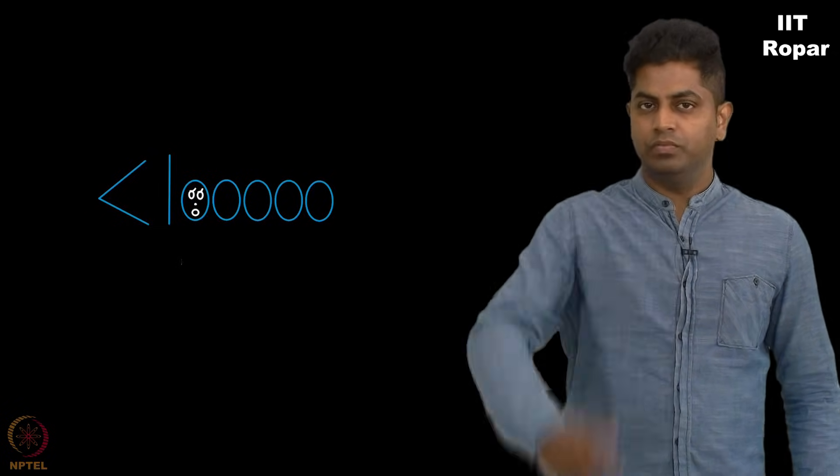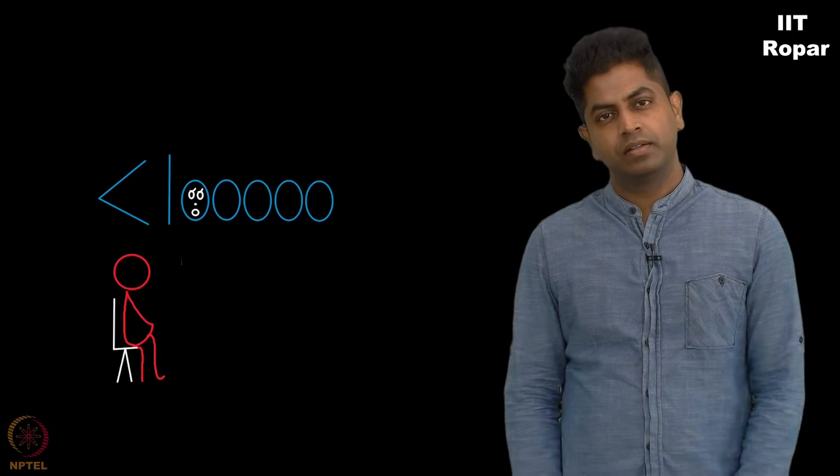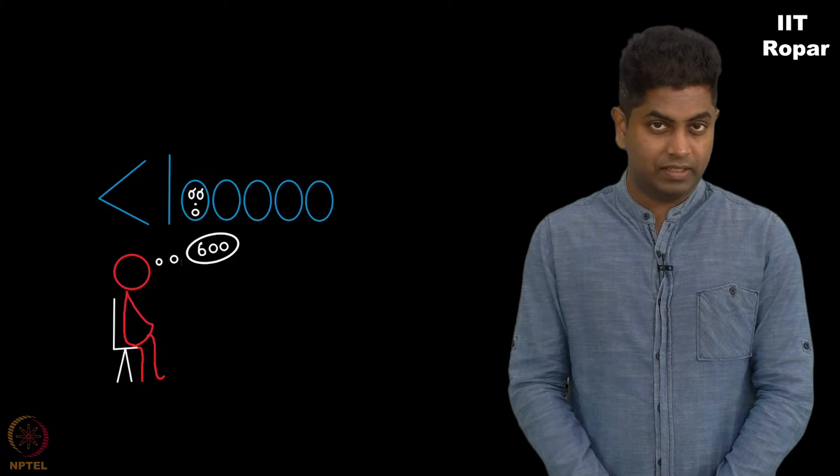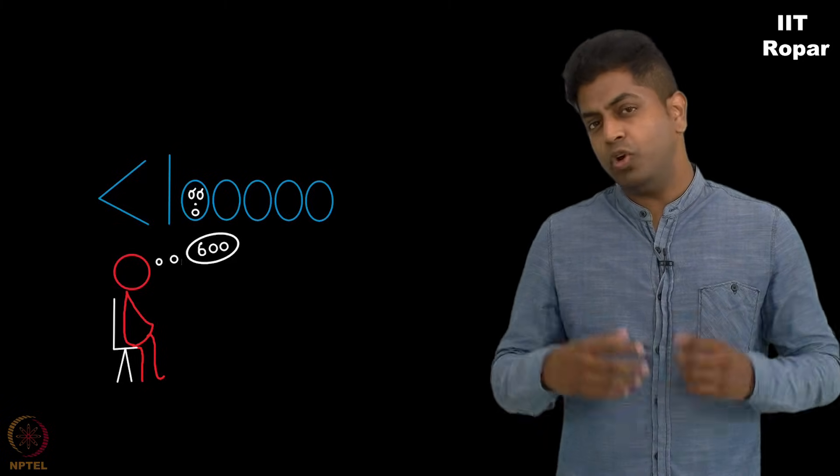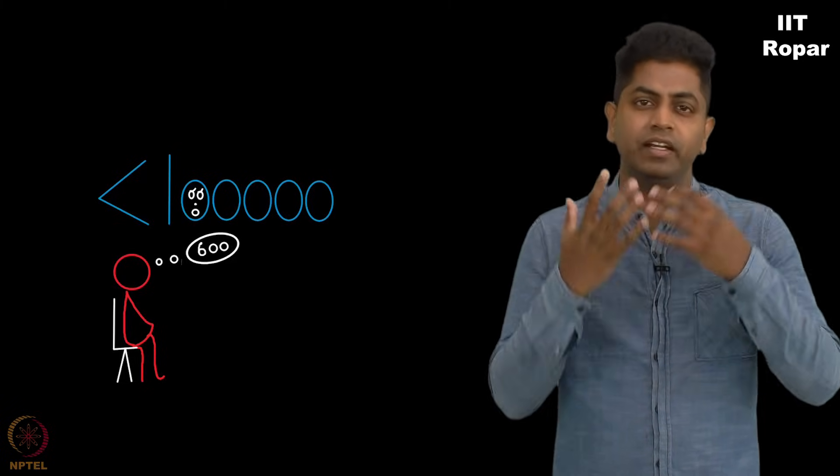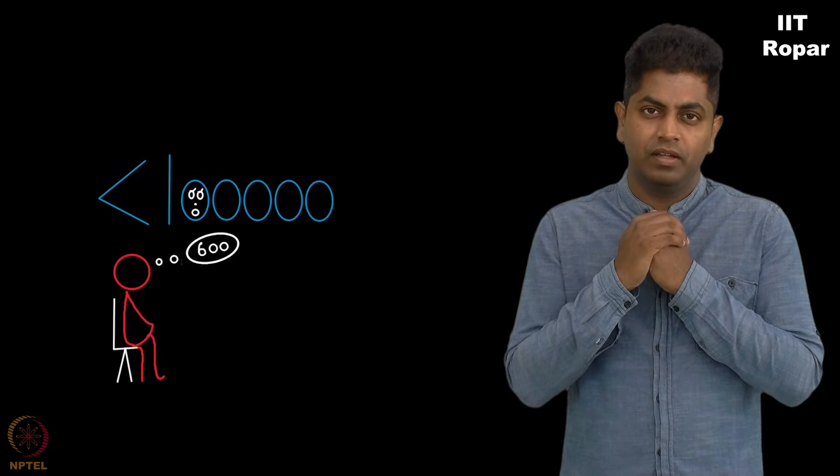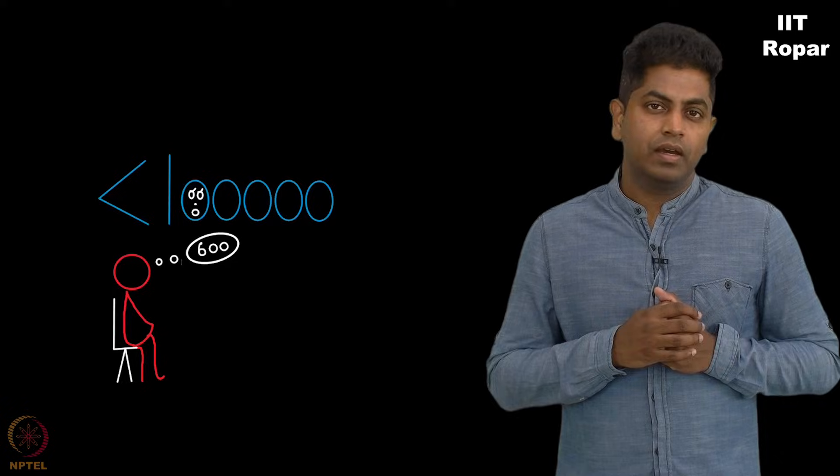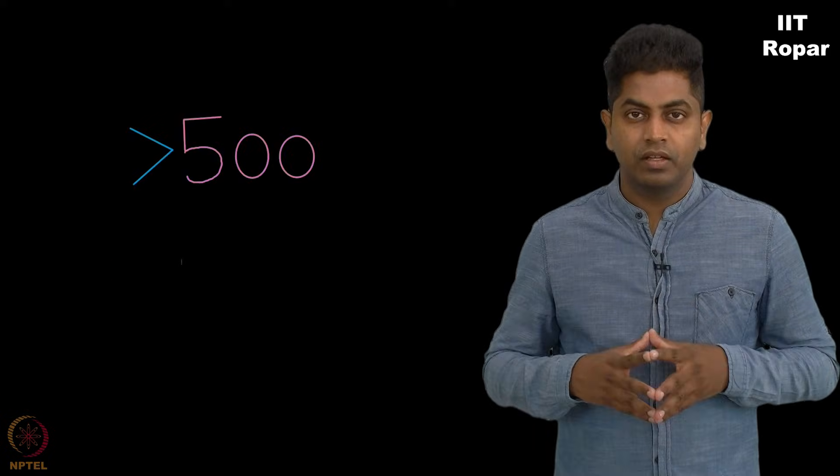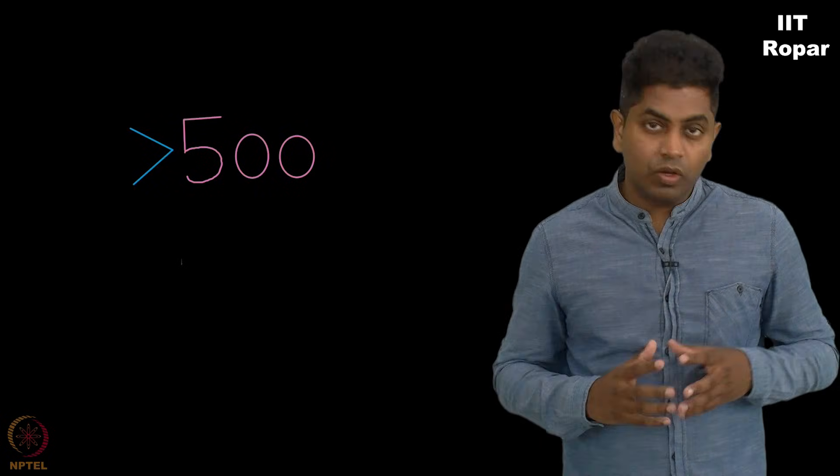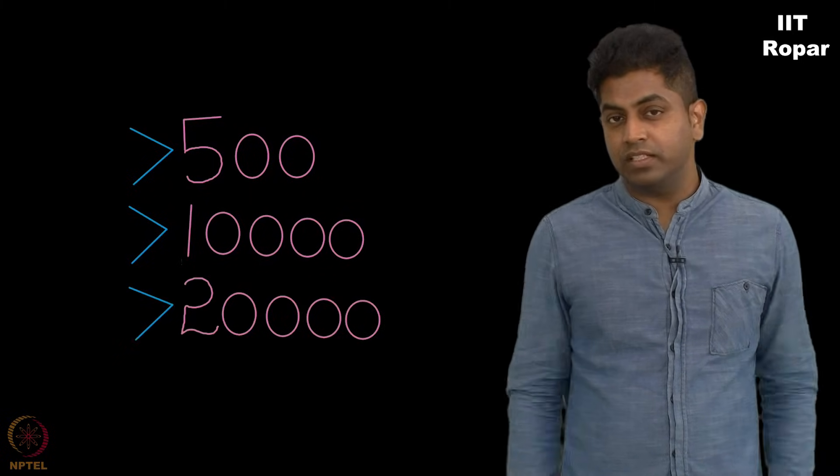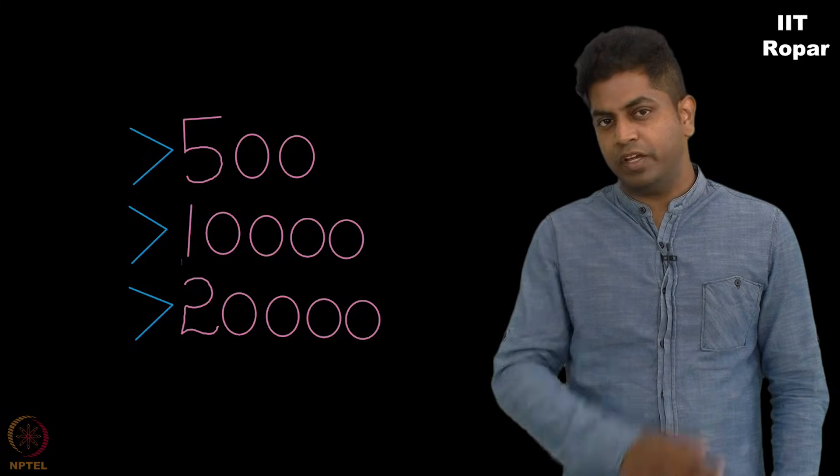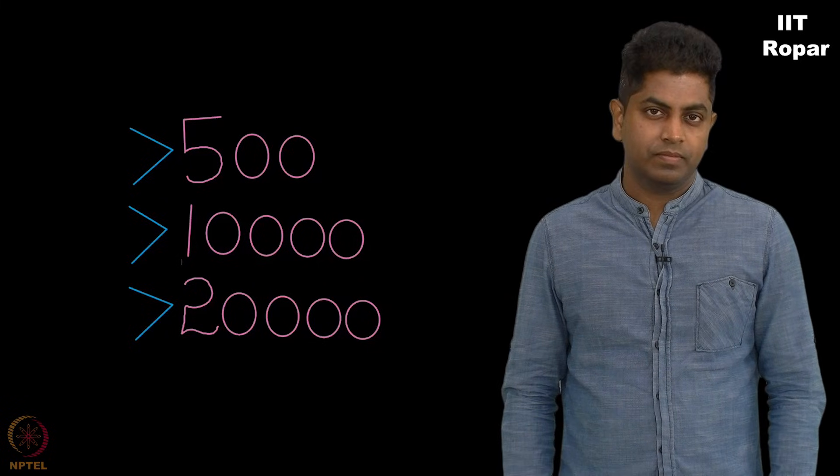Assume you keep the number 600 in your mind. I know it is less than one lakh. How on earth will I guess that it's going to be 600? I should ask you this question: is it greater than 500? Is it greater than 10,000? Is it greater than 20,000 and so on. Is there a smart way of doing this? Think about it.